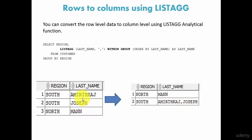You see here for South, I have two customers, and I'm transforming that row into column level data into a single column. For South we have Amritraj, Joseph - these are the two customers combined into a single column.